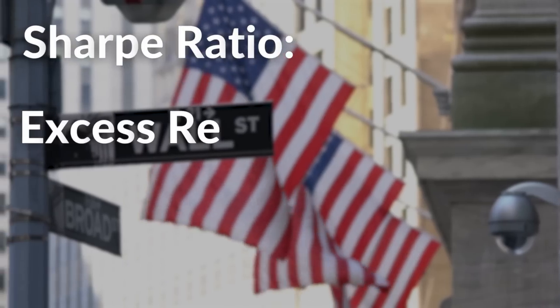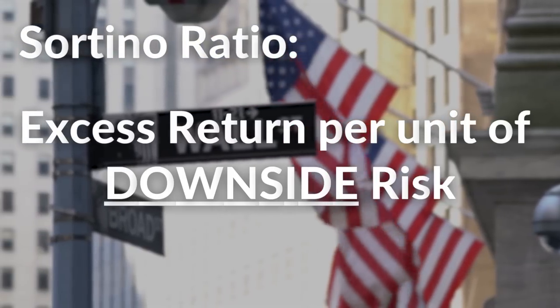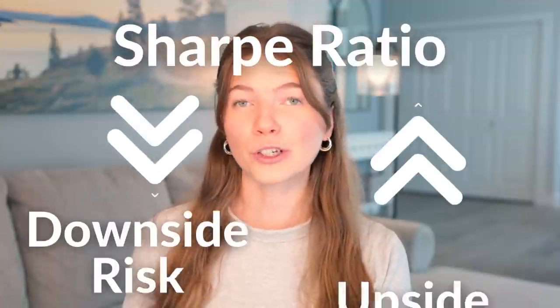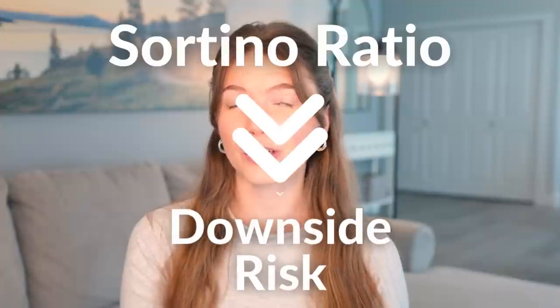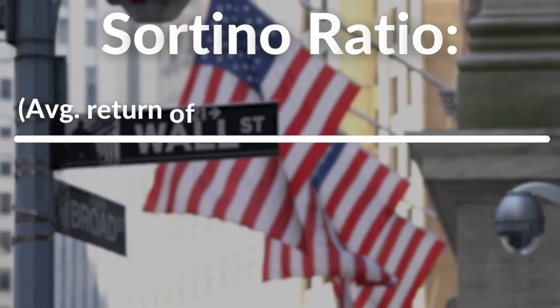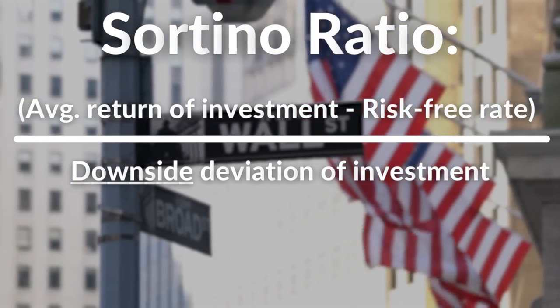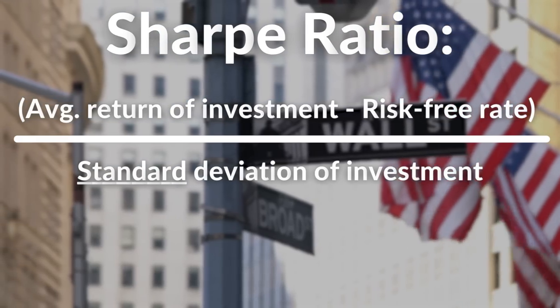The Sharpe Ratio measures the excess return earned per unit of total risk. The Sortino Ratio measures the excess return per unit of downside risk. So the Sharpe Ratio measures both the upside and the downside risk, while the Sortino Ratio primarily measures the downside risk. When paired together, it provides investors with a more comprehensive understanding of an investment's risk-adjusted performance. These ratios are determined by taking the average return of an investment and subtracting the risk-free rate, then dividing it by the standard deviation of the investment.